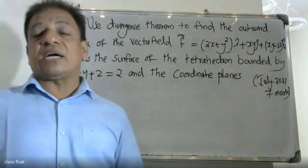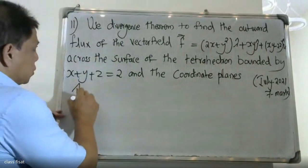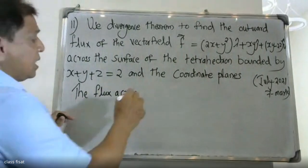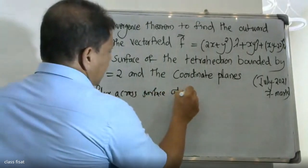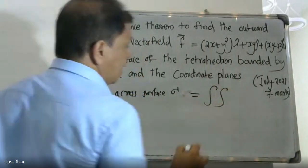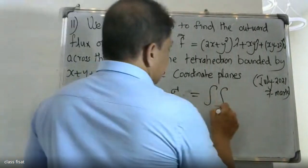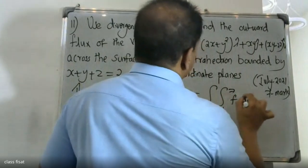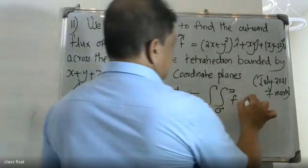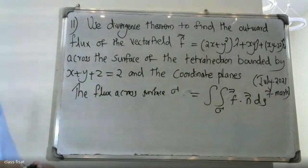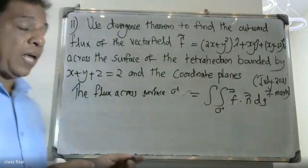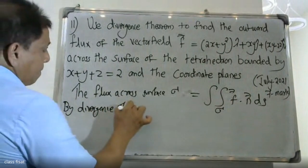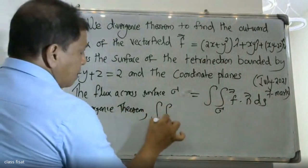The flux across the surface Sigma is given by the double integral over Sigma of F dot n dS. By the divergence theorem, this double integral over Sigma of F dot n dS equals the triple integral of div F over the volume.